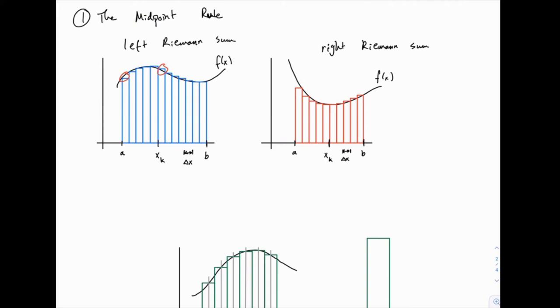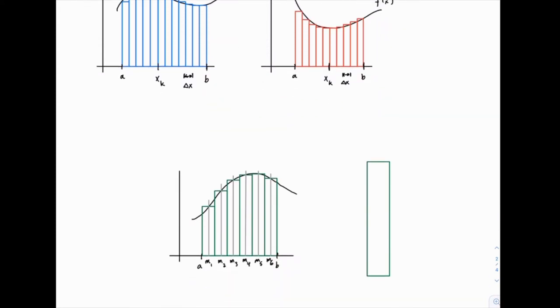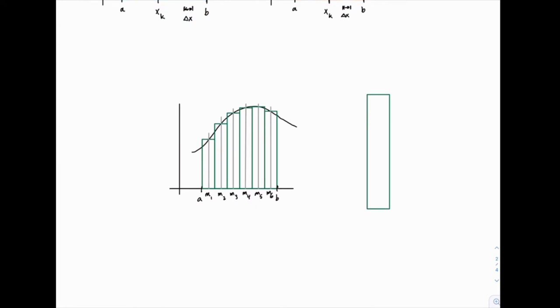So one simple way to kind of get the best of both worlds is to use points halfway in between. Rather than using the left side of each interval or the right side to determine the height of the rectangle, we can use the midpoint, and that's what the midpoint rule does. So we can use a middle Riemann sum, and that's what I have drawn here in green.